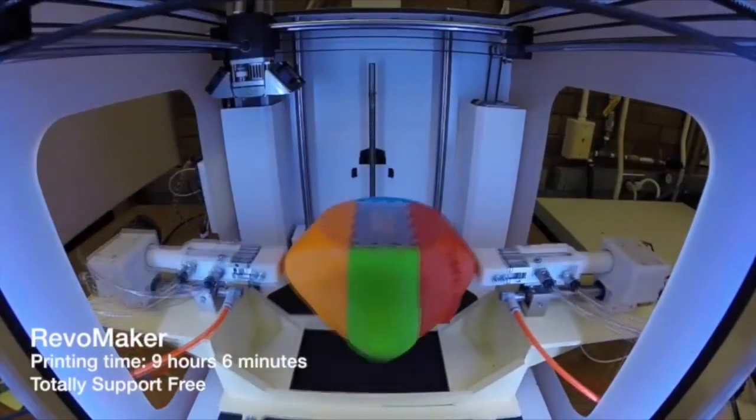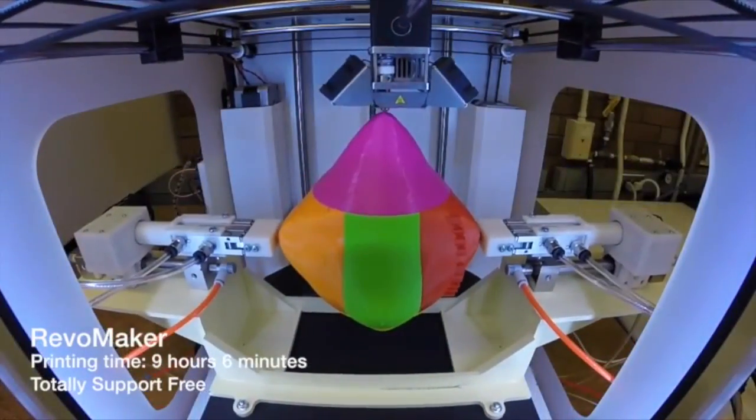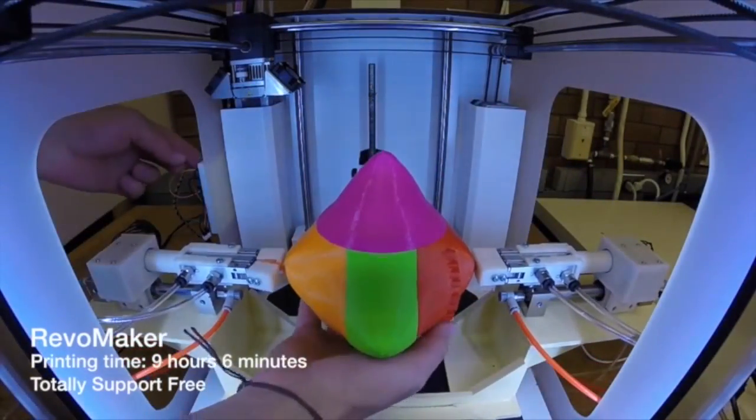By continuing to print and revolve, RevoMaker completes the model and we snap off the two extra handles.